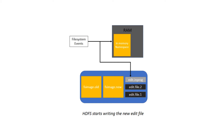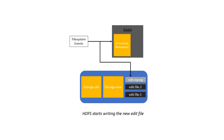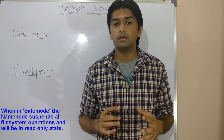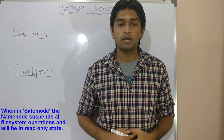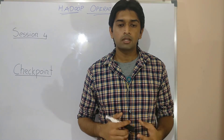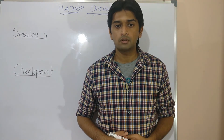The biggest drawback with this technique is that until the name node completes writing the namespace to disk from its RAM, it cannot entertain any new file system events and will be in a mode called safe mode. This means HDFS would be in a read-only mode and will not allow any changes to the file system so that the checkpoint process is not interrupted.